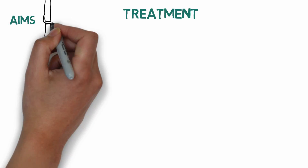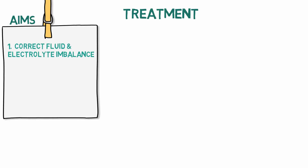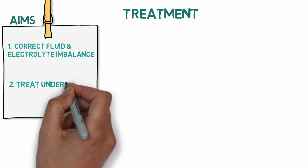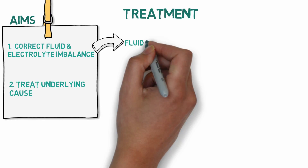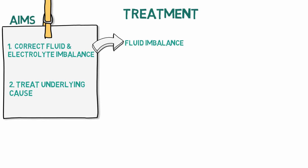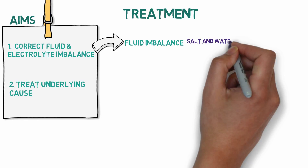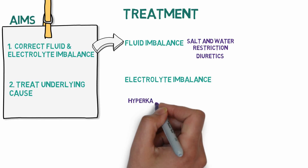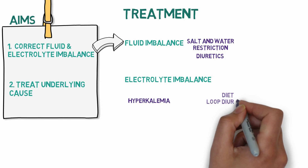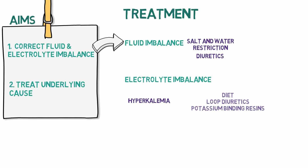Treatment of acute renal failure is mainly associated with correction of fluid and electrolyte imbalance and treatment of the underlying cause. Fluid imbalance is managed through hypervolemia management via salt and water restriction and diuretics like furosemide. The most prominent electrolyte imbalance is hyperkalemia, which is managed by dietary restriction of potassium, loop diuretics, and potassium-binding resins.